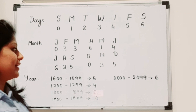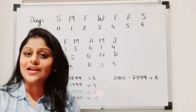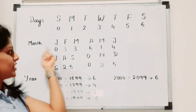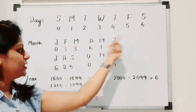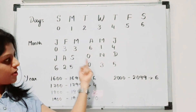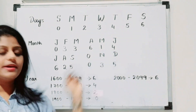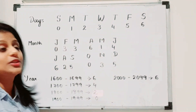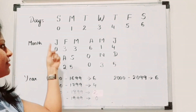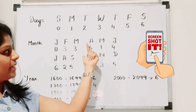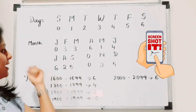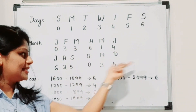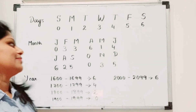Next we have months, from January to December. To remember the month codes, divide them into four groups of three: January, February, March is the first part; April, May, June is the next; then July, August, September; and October, November, December is the last part.